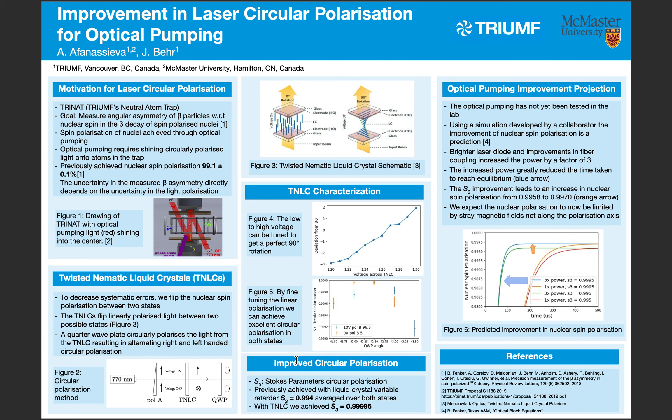These plots show the characterization of the liquid crystal. It turns out that going from zero volts to 10 volts doesn't perfectly flip the liquid crystal by 90 degrees, but by modifying the lower voltage setting to about 1.27 volts, we're able to achieve a perfect 90-degree rotation.